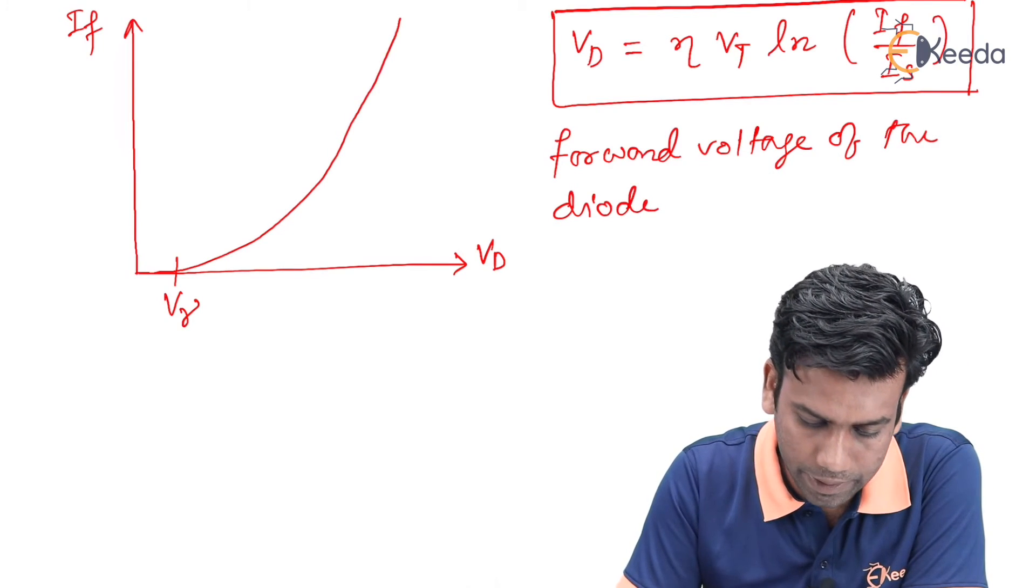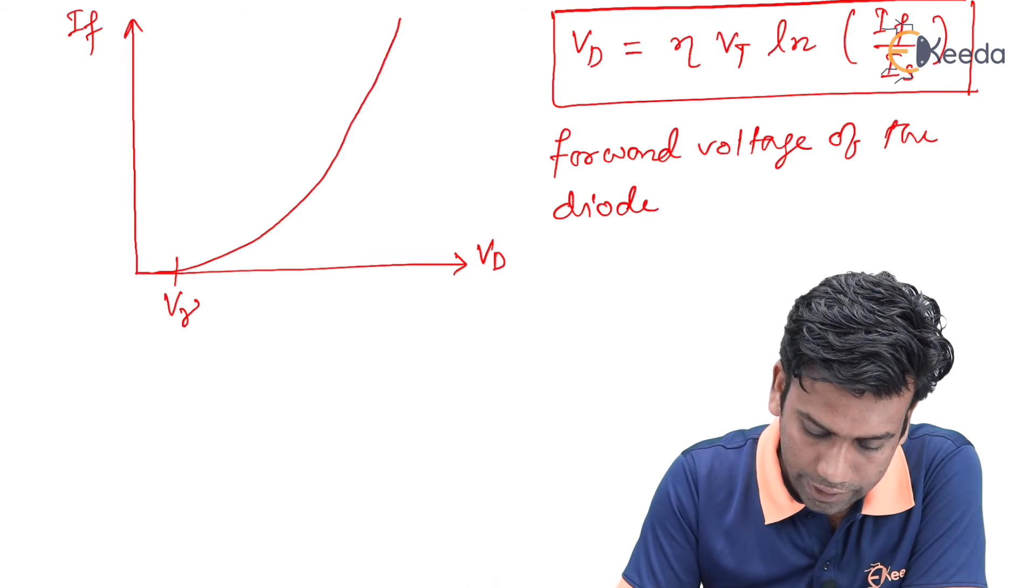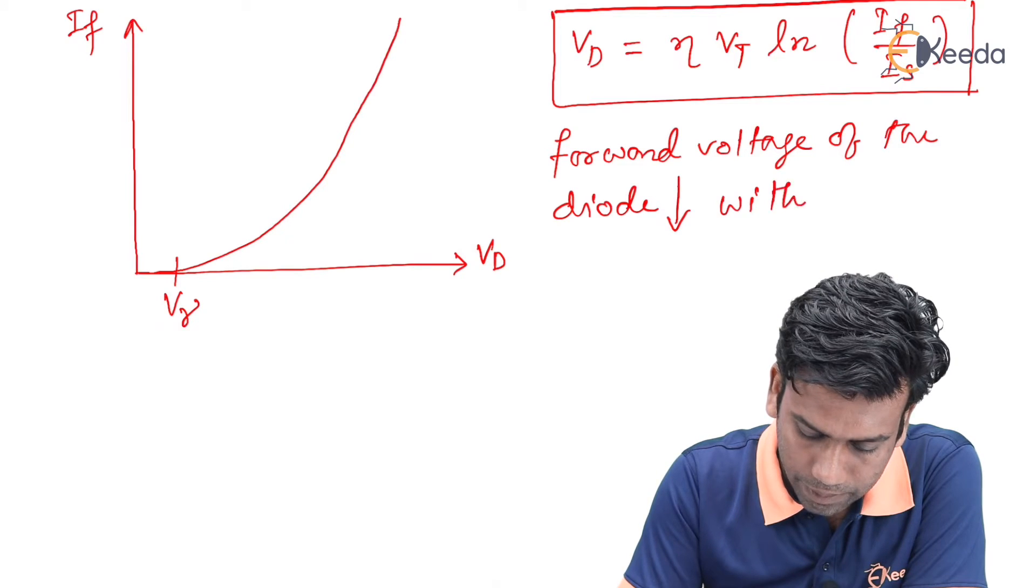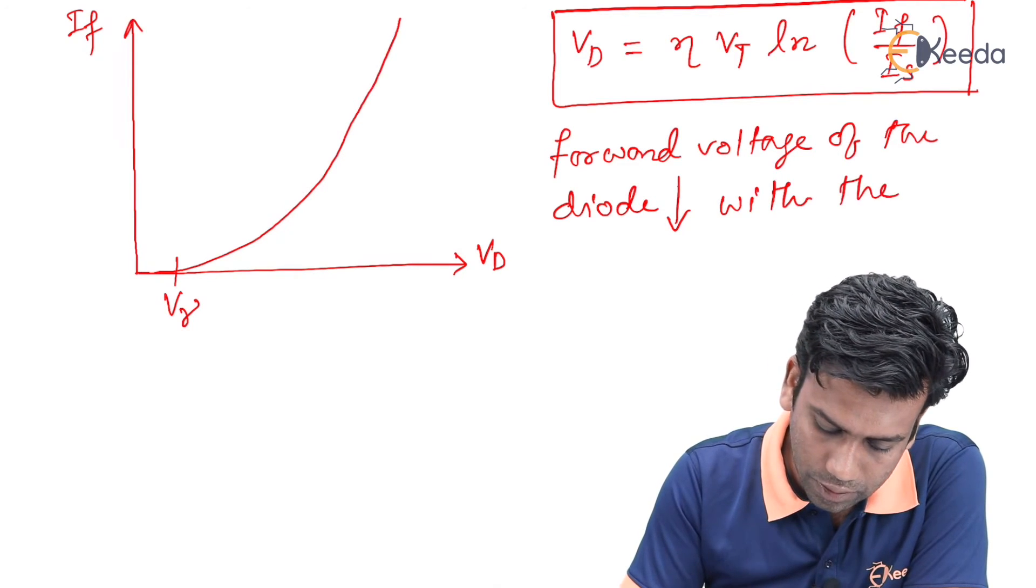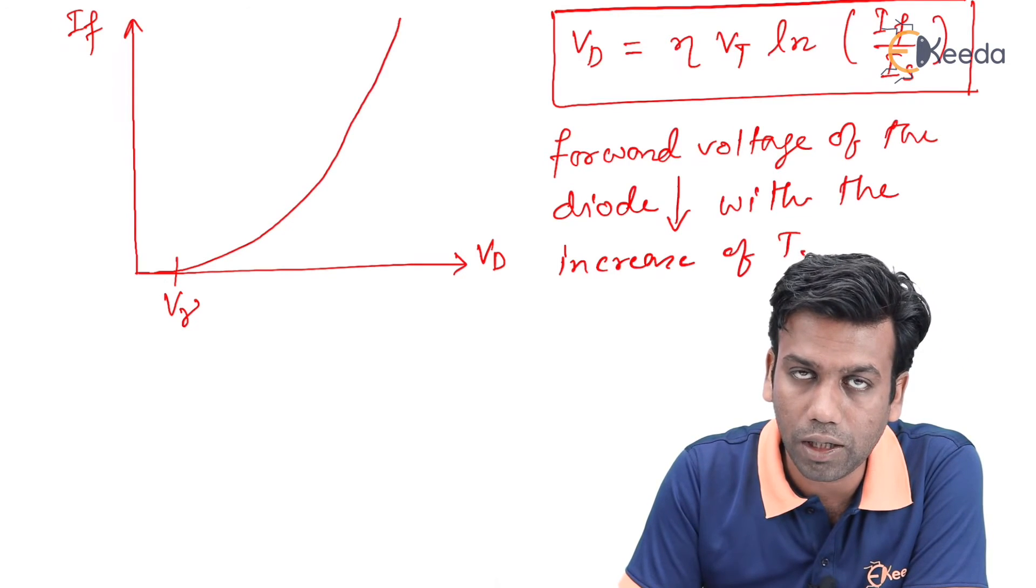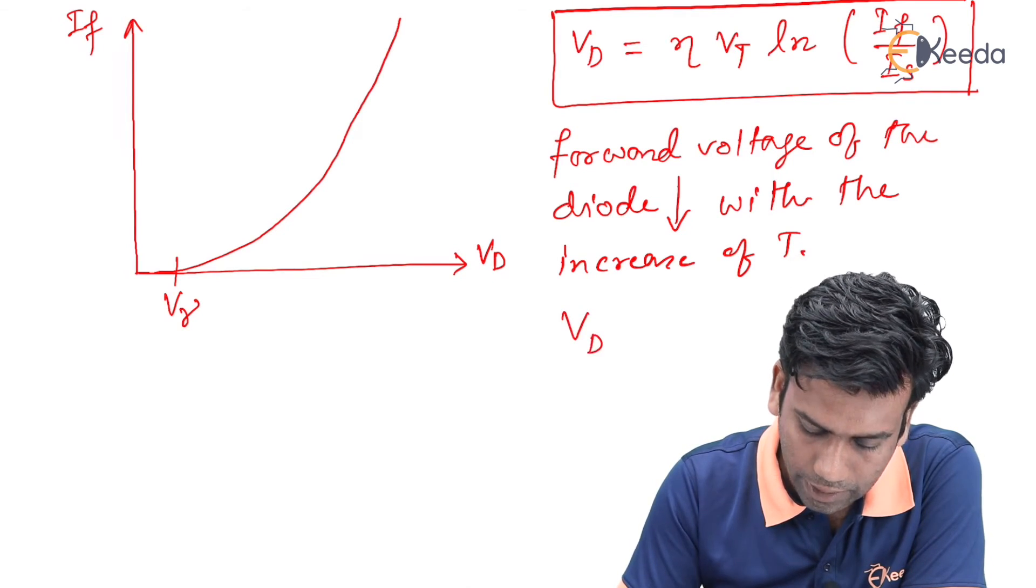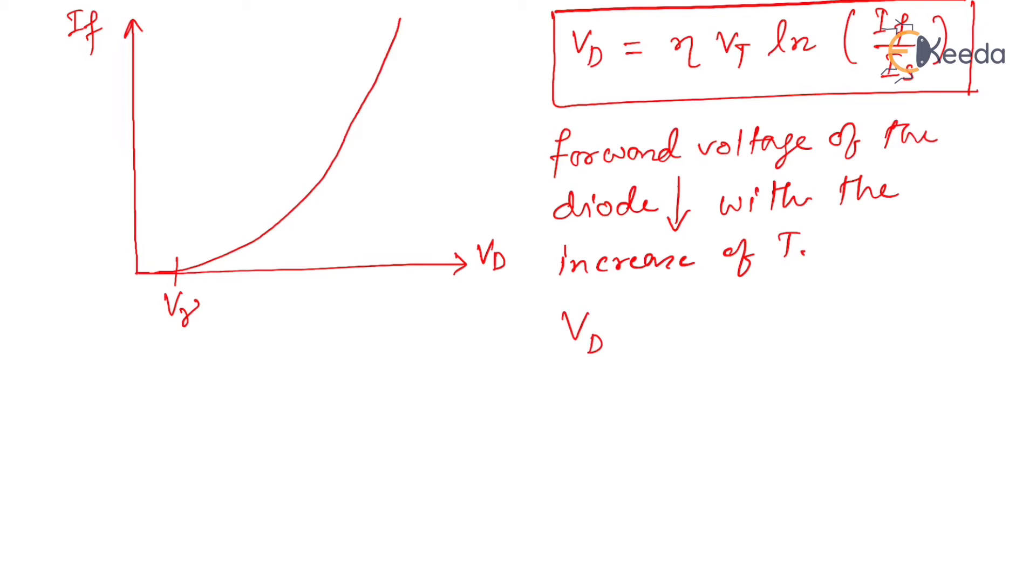depends on temperature in this manner: the forward voltage of the diode decreases with the increase of temperature. According to the thumb rule, we can say that V_D, the forward voltage of the diode, decreases by 2.5 millivolt per 1 degree centigrade rise in temperature.